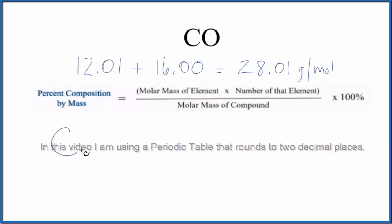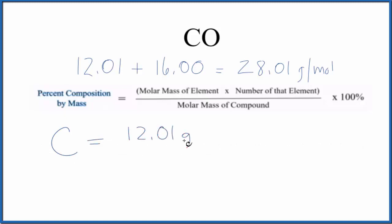Let's start with carbon. Carbon on the periodic table at 12.01 grams per mole, and we only have one carbon atom. So when we multiply the molar mass of the element, the atomic mass of the element, times the number of the element, we only have one. So we won't write that. Then we divide by the molar mass of the entire compound, that 28.01. Multiply by a hundred, so we get the percent.